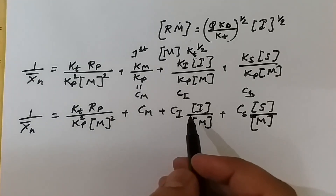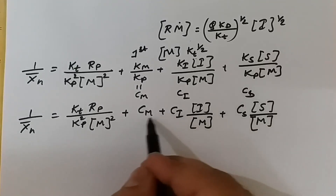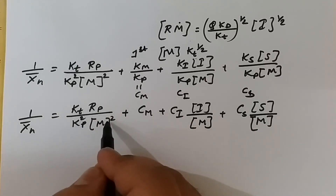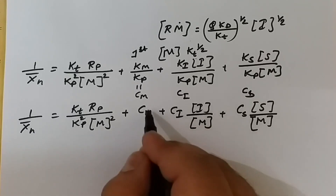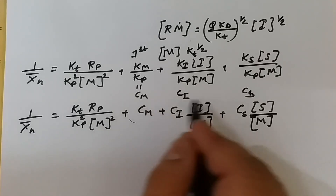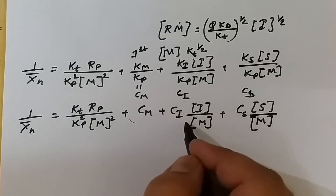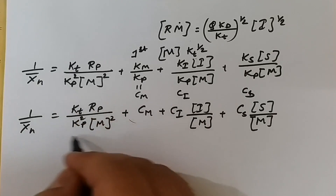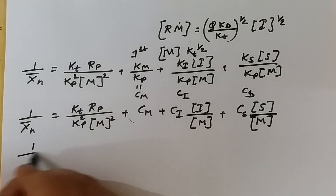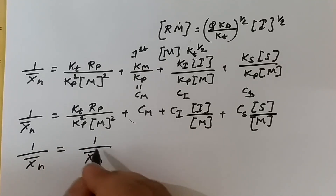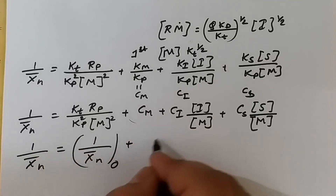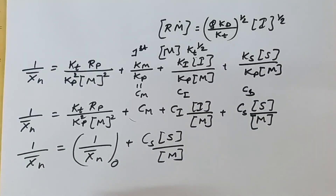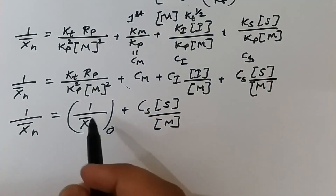Under experimental conditions of constant Rp/[M]², and by eliminating chain transfer to monomer and initiator — because their contributions are very small — the entire first term becomes constant. We can write it as 1/x̄n° (the value without solvent transfer). Eliminating Cm and Ci·[I]/[M] terms, we are left with: 1/x̄n = 1/x̄n° + Cs·[S]/[M].